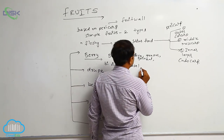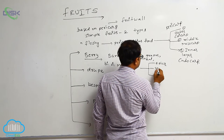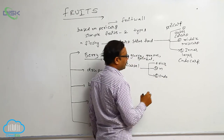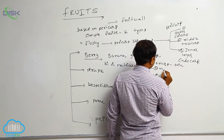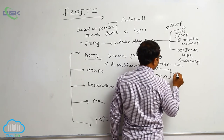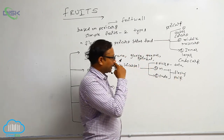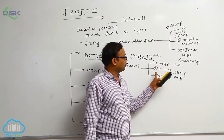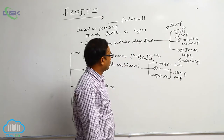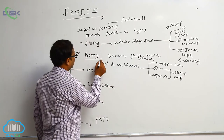Inside a berry, the pericarp has three layers: epicarp, mesocarp, and endocarp. The epicarp is a thin layer. The middle mesocarp and endocarp both become fleshy to form the pulp — that is the important point. Seeds are scattered inside that pulp. That is known as berry.